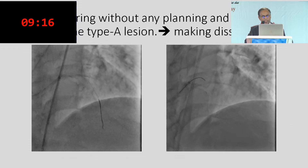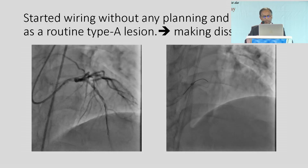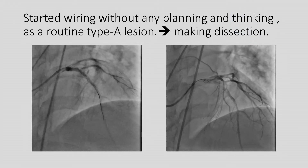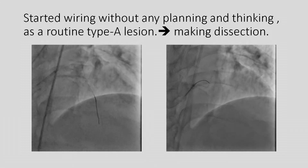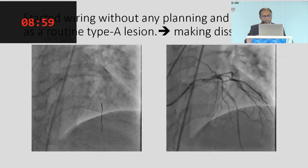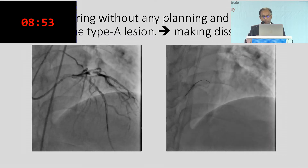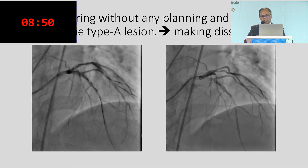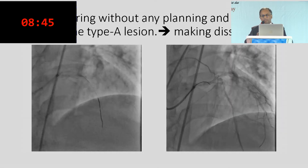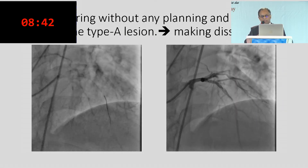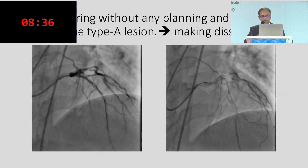Without thinking — it was an ad hoc case — after wiring I felt resistance after crossing the lesion in the distal LAD. The wire tip was not moving. I felt something was wrong. The patient started complaining of chest pain. I pulled out the wire and there was restriction in flow to the distal LAD; the dissection became obvious. The wire had gone not in the true lumen but in the sub-intima.